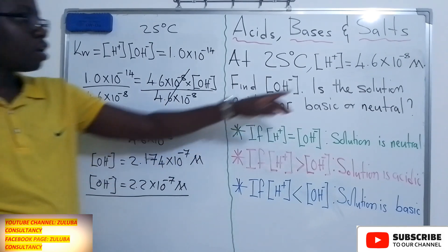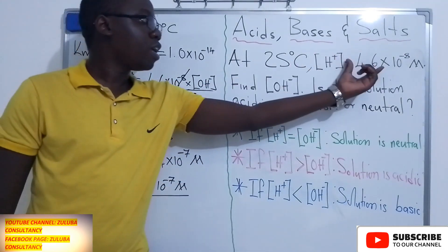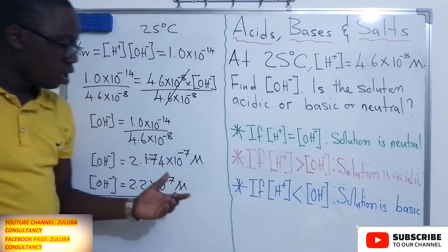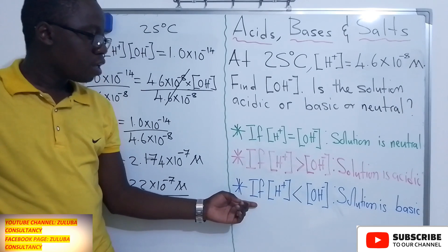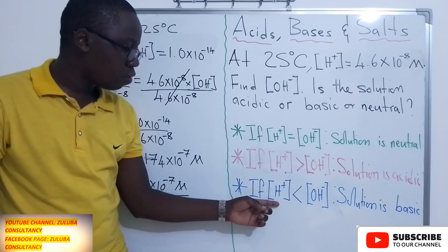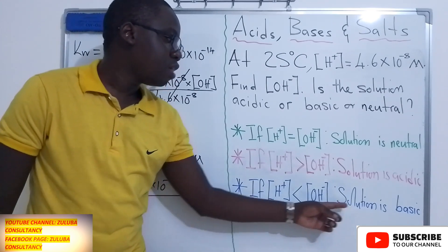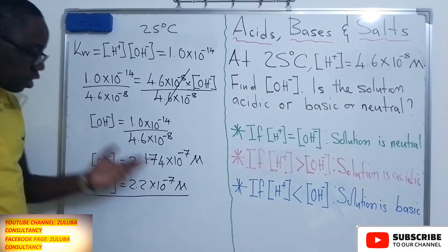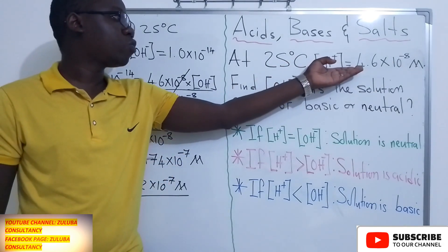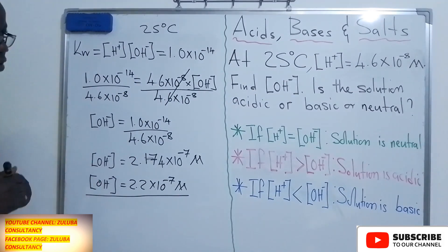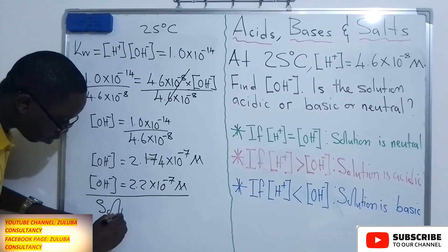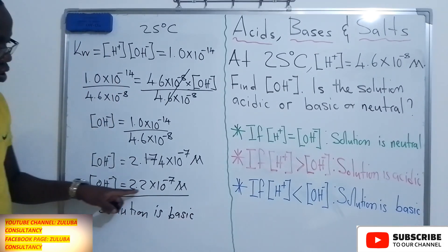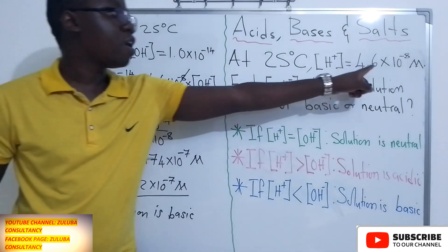The third point tells us that if the concentration of H⁺ is less than the concentration of OH⁻, then the solution is basic. When we look at our values, the concentration of OH⁻ is greater than the concentration of H⁺. This tells us that this solution is basic, because 2.2 × 10⁻⁷ M is greater than 4.6 × 10⁻⁸ M.